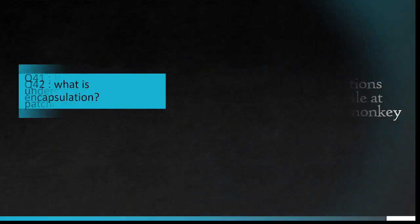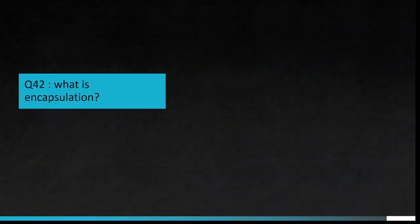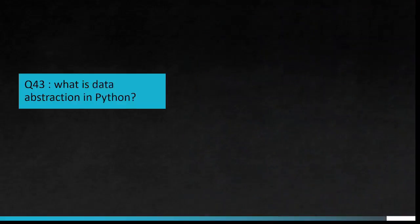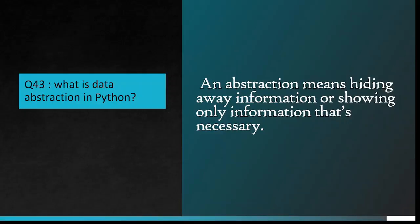Question number 42: What is encapsulation? Encapsulation is the binding of data and functions that manipulate the data. It is a process of wrapping up data and variables together. Question number 43: What is data abstraction in Python? An abstraction means hiding away information or showing only information that's necessary.